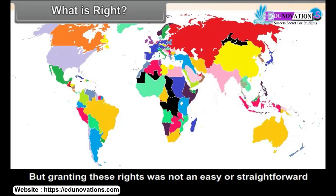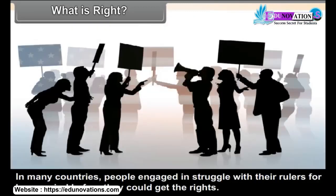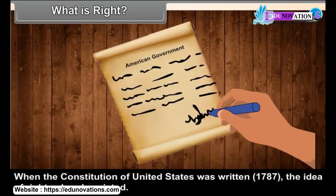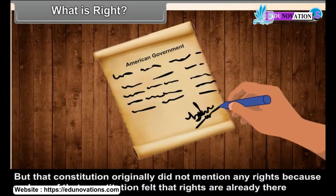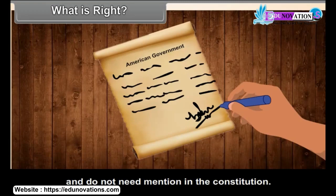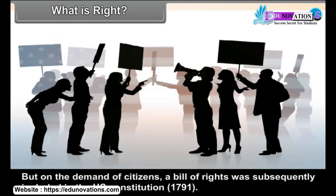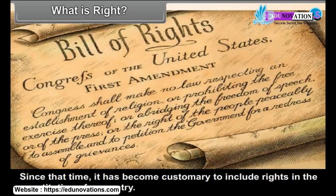But granting these rights was not an easy or straightforward process. In many countries, people engaged in struggles with their rulers for long periods before they could get their rights. When the Constitution of United States was written in 1787, the idea of rights also existed. But that Constitution originally did not mention any rights because makers of that Constitution felt that rights are already there and do not need mention in the Constitution. But on the demands of citizens, a Bill of Rights was subsequently included in the U.S. Constitution in 1791. Since that time, it has become customary to include rights in the Constitution of a country.